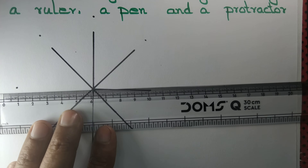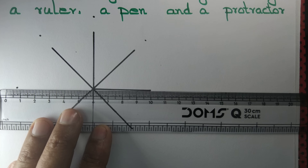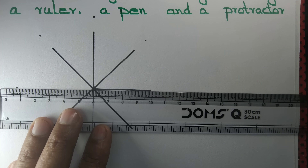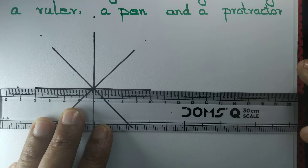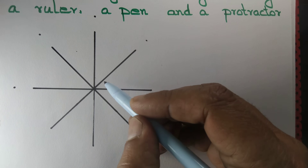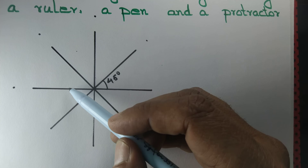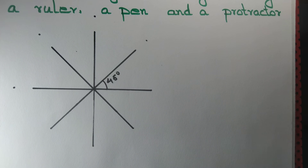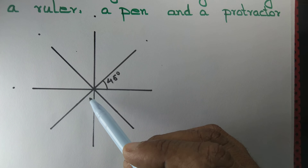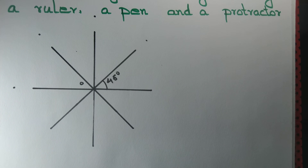Lastly, we extend the first line segment that we have drawn by another 4 cm. So we draw several line segments making angles of 45 degrees, 90 degrees, 135 degrees, and 180 degrees, each at a distance of 4 cm from point O. From point O, we have drawn line segments at angles of 45 degrees, 90 degrees, and so on.